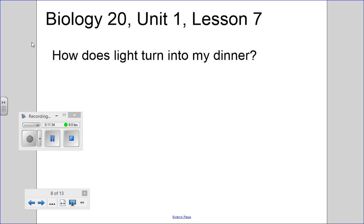So this is lesson seven. And the title of this one is, How Does Light Turn Into My Dinner? So we are really going to focus on light. Now we know that photosynthesis requires light. And what you'll see today is it's actually only part of photosynthesis that requires light. The other part doesn't actually need it, but it can't happen without the part and the light happening first. So today we're going to focus on just the part of photosynthesis where light is actually required.